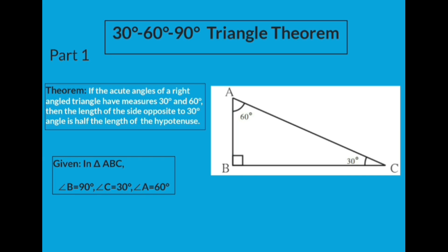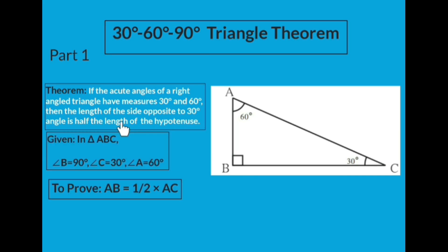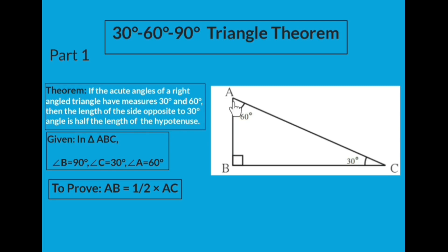Now let's see what we have to prove. Looking at the consequent part of the statement — the length of the side opposite to the 30-degree angle is half the length of the hypotenuse — side AB is half of hypotenuse AC. That means we have to prove that AB equals half of AC.